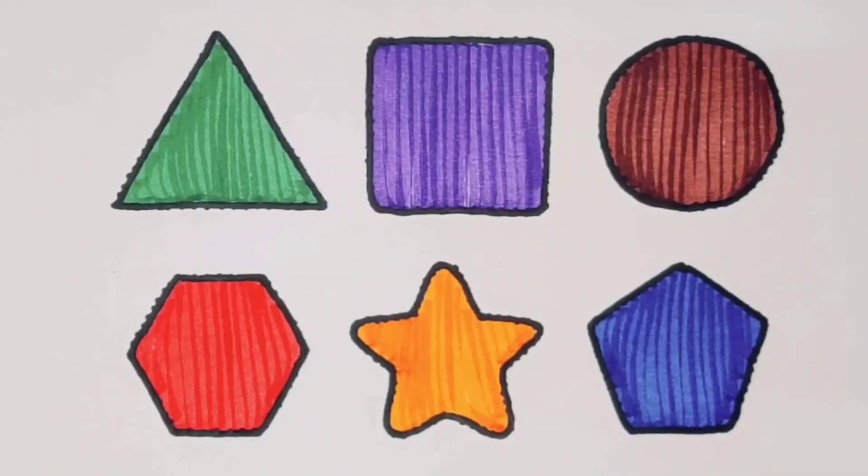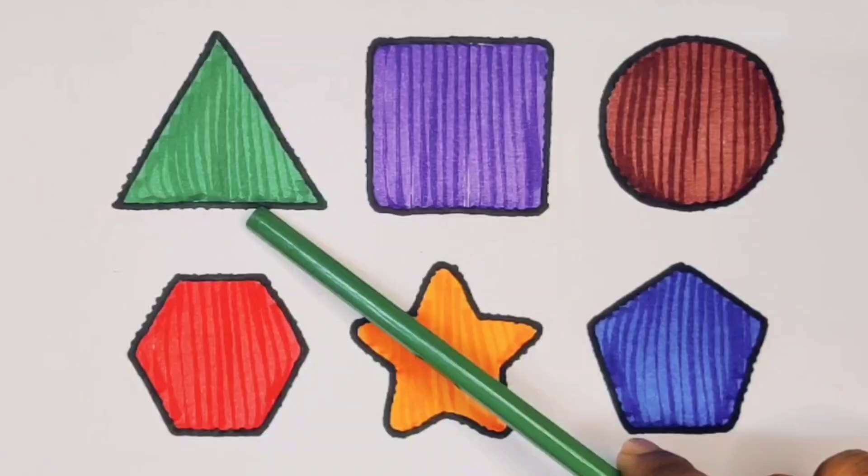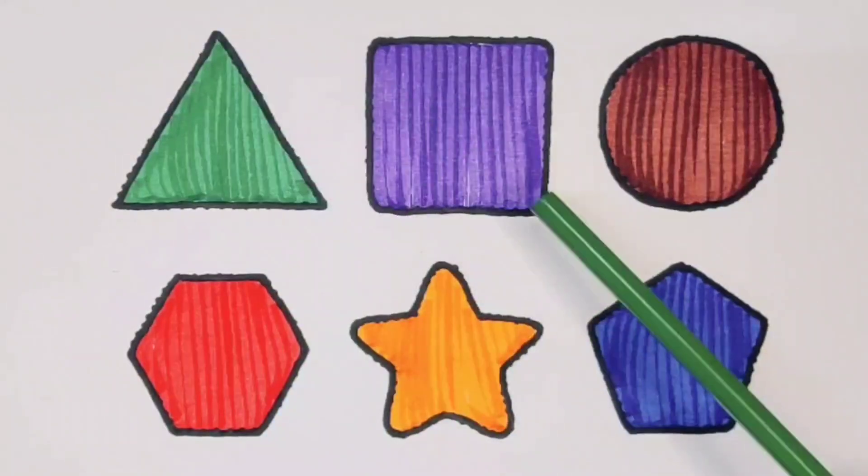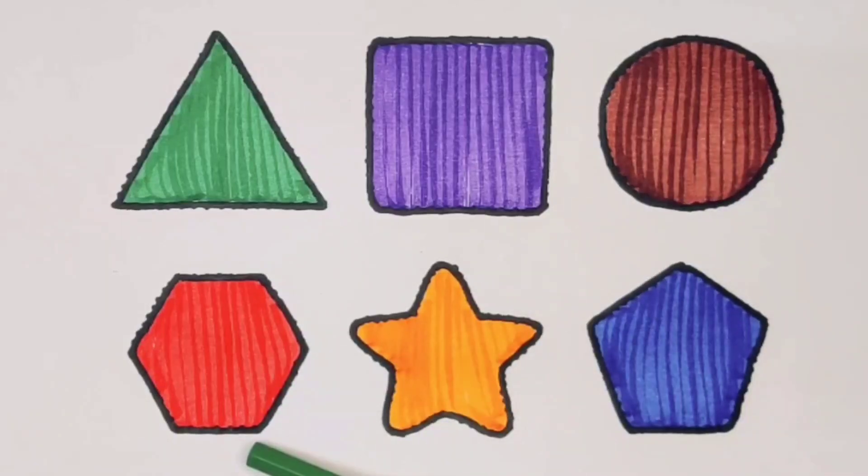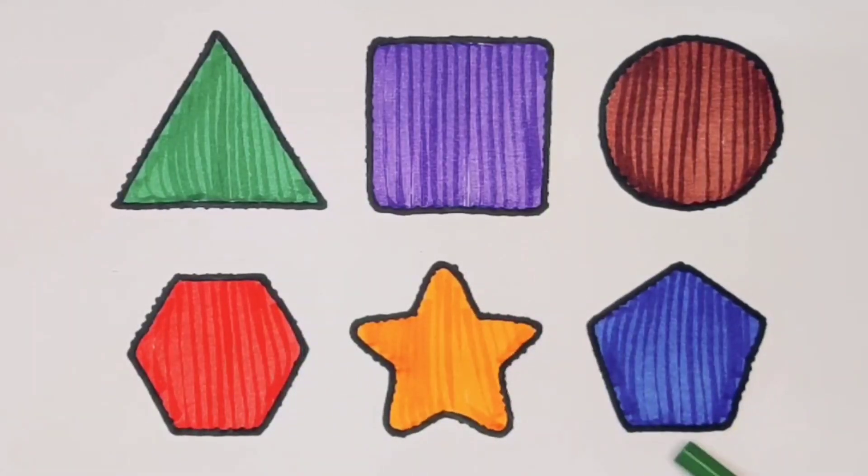What did we learn? We learned green color triangle, purple color square, chocolate color circle, red color hexagon, orange color star, and blue color pentagon.